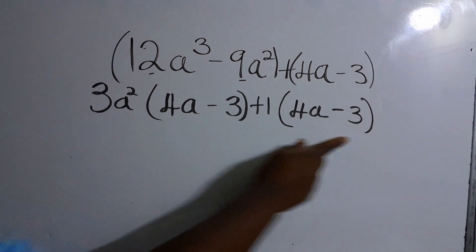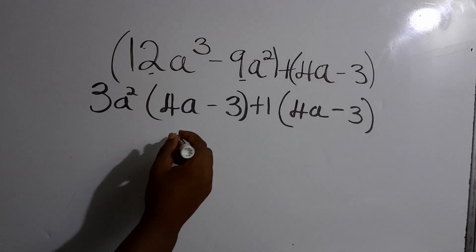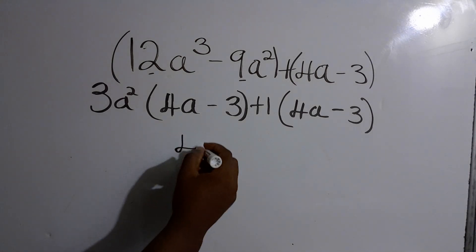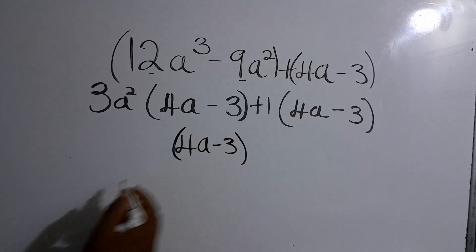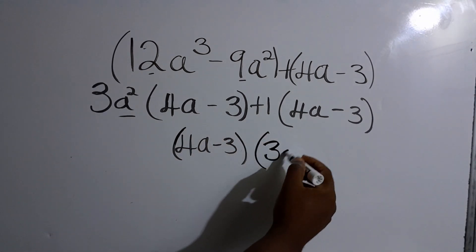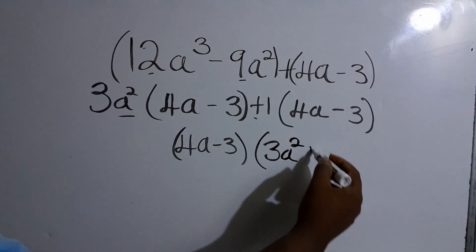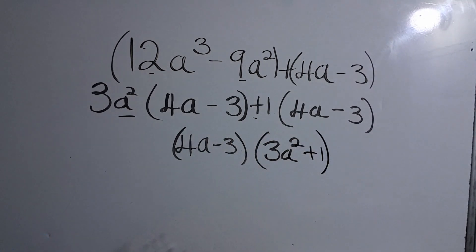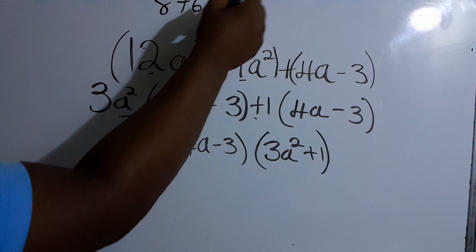If you look closely, you will see that we have 4a minus 3 and 4a minus 3 — both are common. So we write (4a - 3) as one bracket, and what is outside is 3a² plus 1. That gives us the final answer: (4a - 3)(3a² + 1).